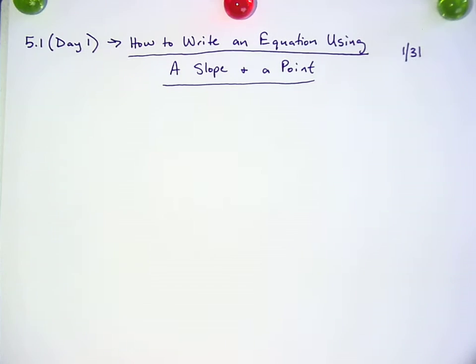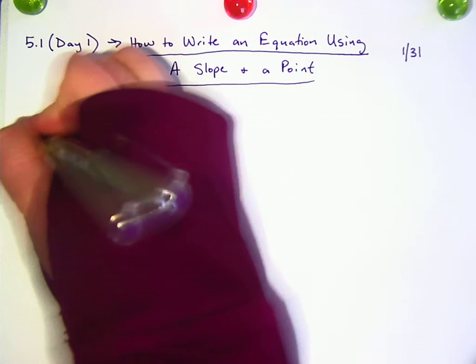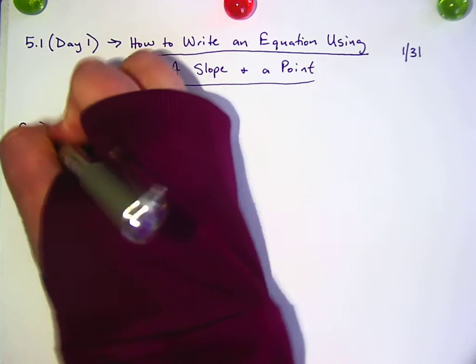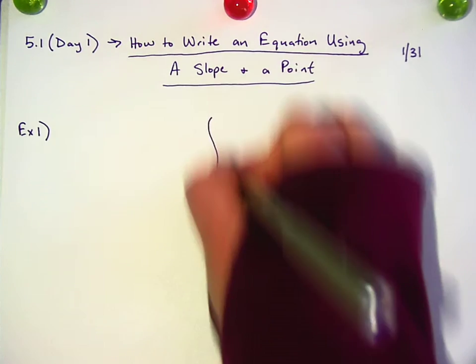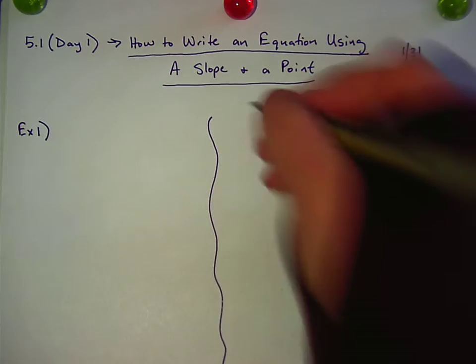Okay, so we've got a slope and a point. So we want to write the equation of a line that passes through. I'm going to do an example, and over here, we're going to do steps like how to.